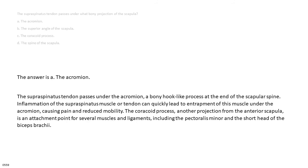The answer is A, the acromion. The supraspinatus tendon passes under the acromion, a bony hook-like process at the end of the scapular spine. Inflammation of the supraspinatus muscle or tendon can quickly lead to entrapment of this muscle under the acromion, causing pain and reduced mobility. The coracoid process, another projection from the anterior scapula, is an attachment point for several muscles and ligaments, including the pectoralis minor and the short head of the biceps brachii.